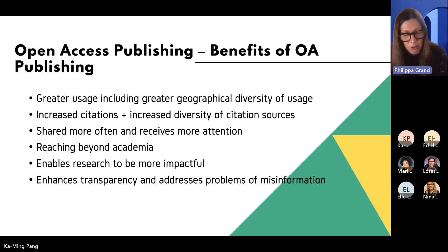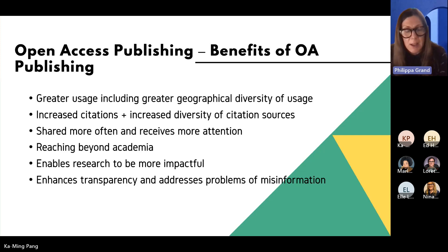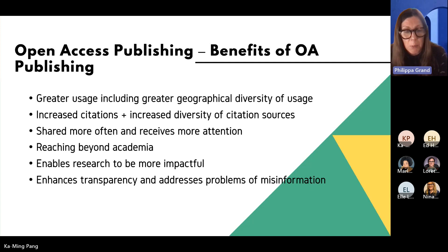Research has shown that open access publications are reaching a substantial number of user groups outside academia, and there's clear evidence for wider public use of open access research compared with closed research. It's also been argued that open access enhances transparency, allowing for greater scrutiny, verification, and reproducibility of scientific results, and can be used to address problems of misinformation and fake news. For those looking to a career in academia to make a difference, open access publishing can help you in achieving that.